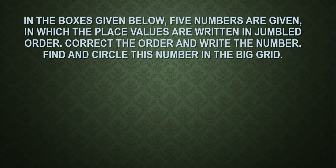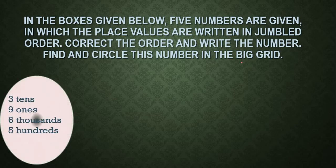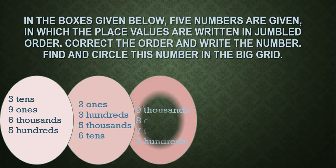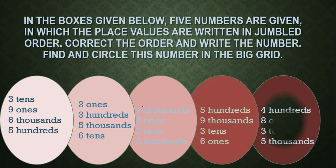Here is the description of the activity. In the boxes given below, five numbers are given in which the place values are written in jumbled form. Correct the order and write the number. Along with that, circle this number in the big grid. Using these jumbled place values we have to form the number and then search and encircle it in that big grid.